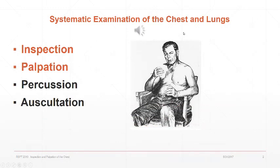The sequence used to systematically examine the chest and lungs has traditionally begun with inspection of the chest, followed by palpation, followed by percussion, and then lastly auscultation. The physician who taught me these components referred to these steps as IPPB, and to make it easy to remember, B meaning breathing.